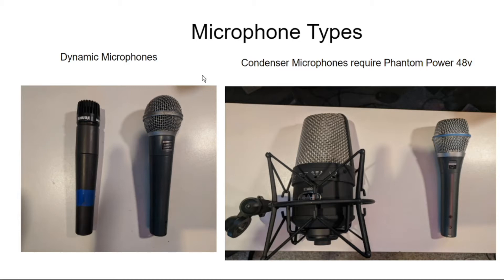All microphones have a certain function that they're really good at, but you do need to know the difference between a dynamic microphone and a condenser microphone. It's not always the way that they look — a handheld microphone can look a lot like another handheld microphone, but one may be a condenser. The big difference is that condenser microphones require something called phantom power, or an additional 48 volts, for the signal to get processed.